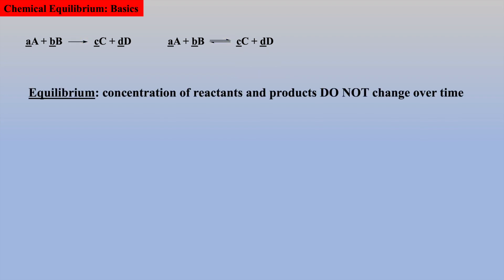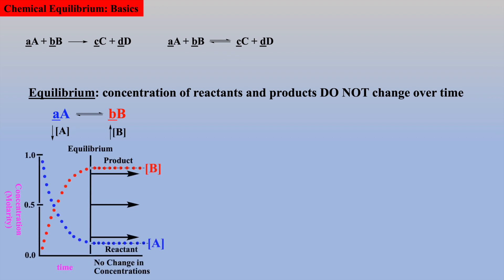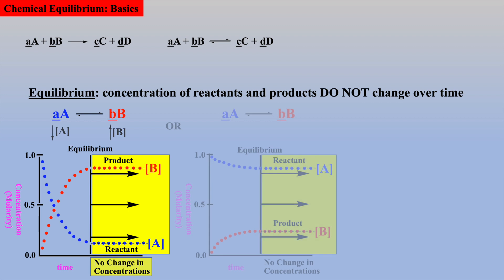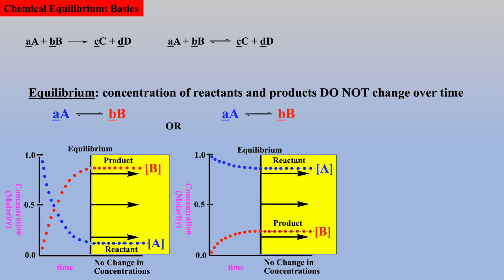A chemical reaction is said to be at equilibrium when the concentrations of reactants and products do not change over time. For example, if we have only reactant A at T equals zero, the concentration of reactant A will drop and the concentration of product B will increase. Equilibrium is when these concentrations do not change over time, which are often one of two scenarios within introductory courses.